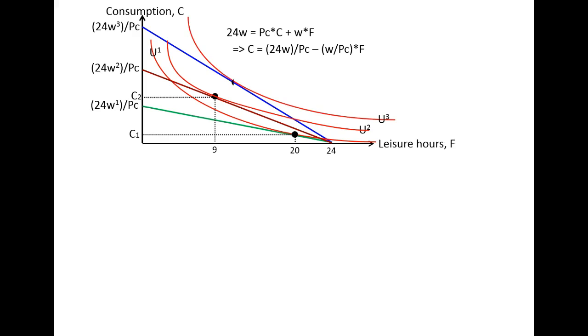We find the highest available utility function, and we realize now that, all of a sudden, I receive a higher consumption level C3, but I'm taking more leisure hours. I will work fewer hours. In this case, I want to have 12 hours of leisure, and that means 12 hours of labor.